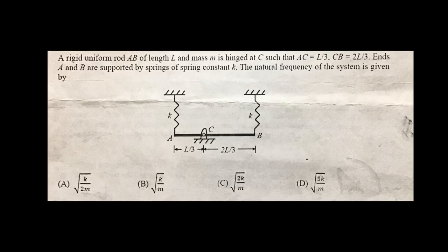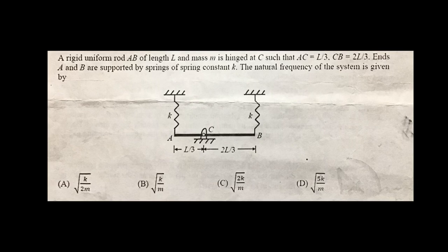In this video we will be doing another problem which was asked in GATE. You are given a mechanical system as shown here. Please read through the problem carefully — this particular rod AB is not massless, it has a mass of little m, it is hinged at point C, and the respective lengths of segments AC and CB are given. The ends A and B are supported by springs as shown, with spring constant K.